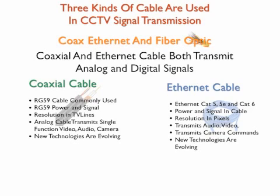Otherwise, to have audio and video, you would have to run an additional wire. New technologies are constantly being developed, and someday it might be possible to have multiple digital transmissions between the camera and the DVR. The Ethernet cable — CAT5, CAT5e, or CAT6 — is designed for digital transmission of data.